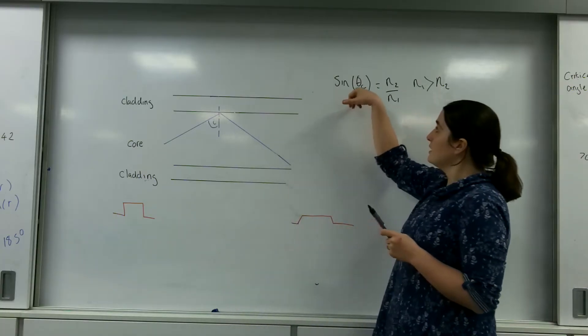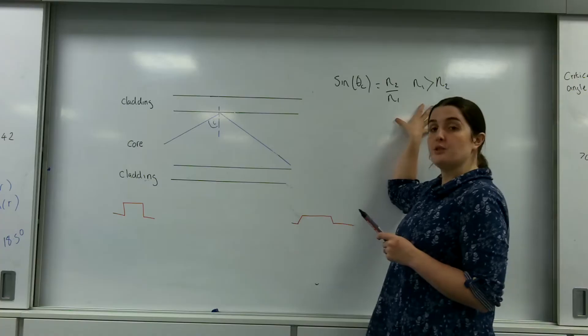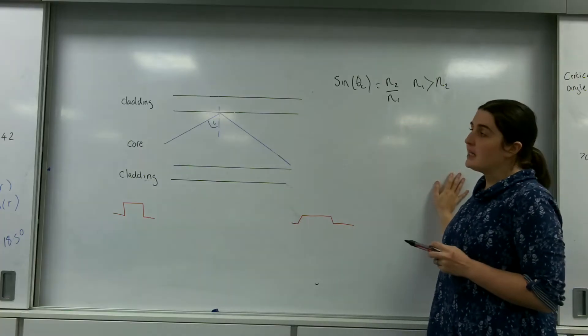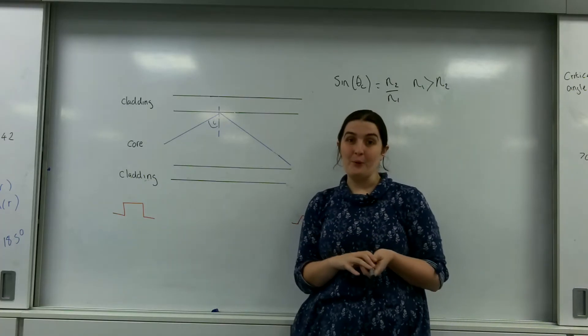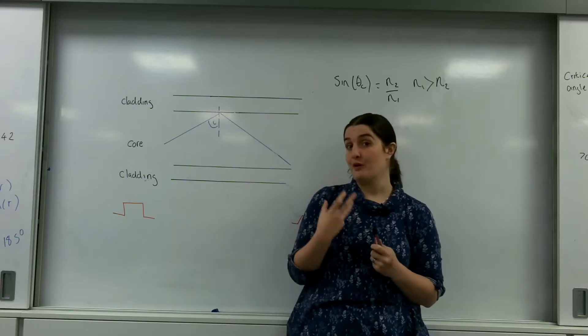Okay, so sine theta c, you can work out this critical angle with this formula here. Now I spoke about diamonds and how they use it to sparkle, but fiber optic cables are a very special case.